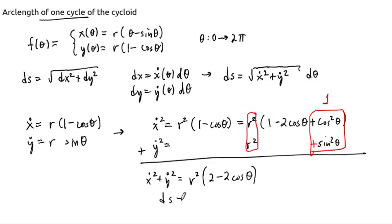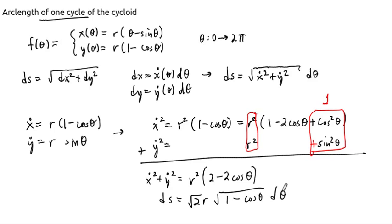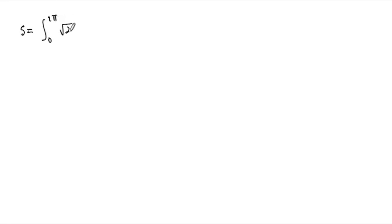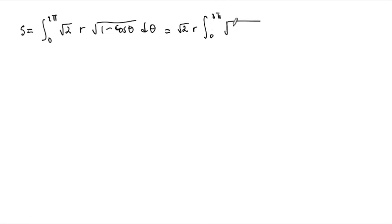This tells us that our arc length element ds equals the square root of two r squared times one minus cosine theta, d-theta. We can factor out a two, so ds equals square root of two times r times the square root of one minus cosine theta, d-theta. The arc length is then the integral from zero to two pi of root two times r times the square root of one minus cosine theta, d-theta. The square root of two and r are constants and can come outside, but we still need to handle the square root of one minus cosine theta.